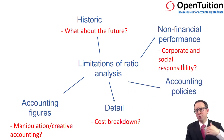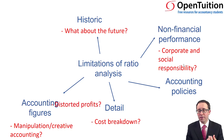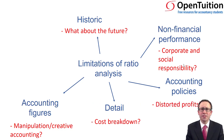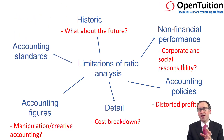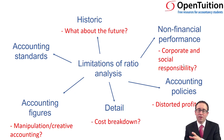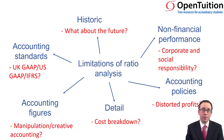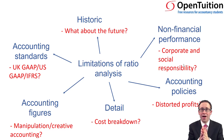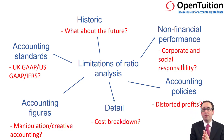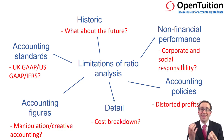Accounting policies — such as revaluation versus cost, or FIFO versus average cost — can potentially distort profits and make comparisons between entities difficult. And don't forget that if you're comparing one company to another, they might adopt a different accounting standard. Is one company using UK GAAP, US GAAP, or IFRS? In exam examples the companies will be using IFRS, but in reality companies may prepare accounts under different rules.